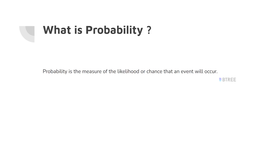Probability is the measure of likelihood or the chance that an event will occur. There are two key concepts: sample space and event. The probability value ranges from 0 to 1.